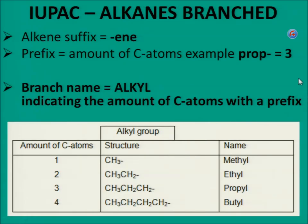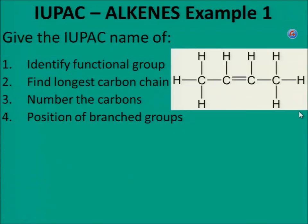IUPAC names for alkenes: alkenes get the suffix '-ene' at the end. The prefix stays the same and the alkyl groups stay the same as for alkanes.